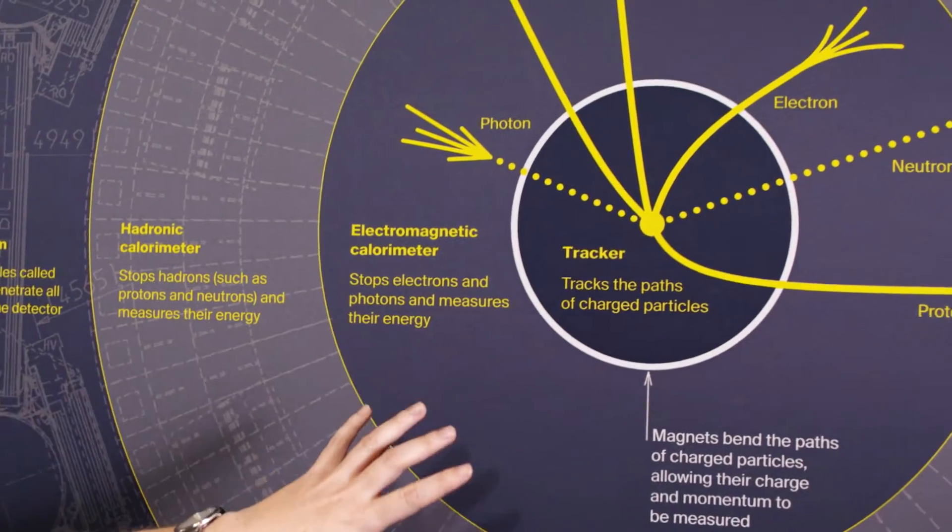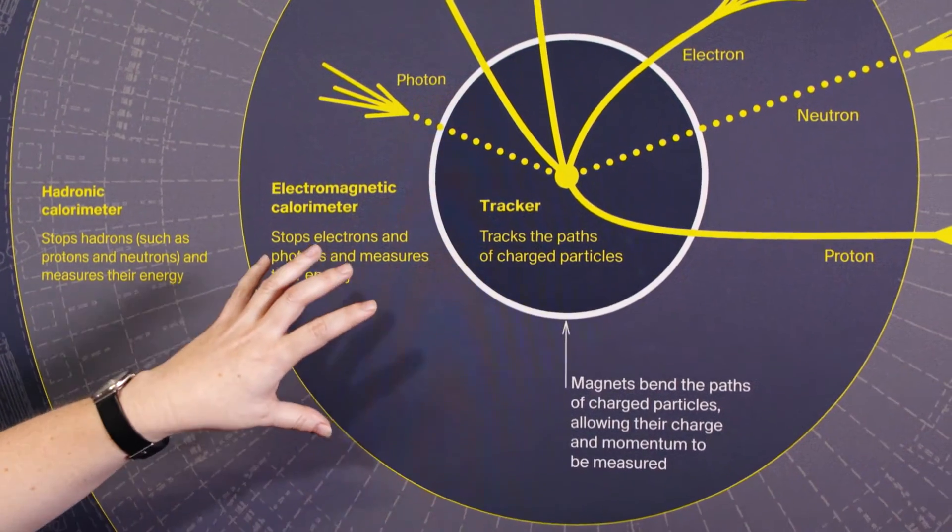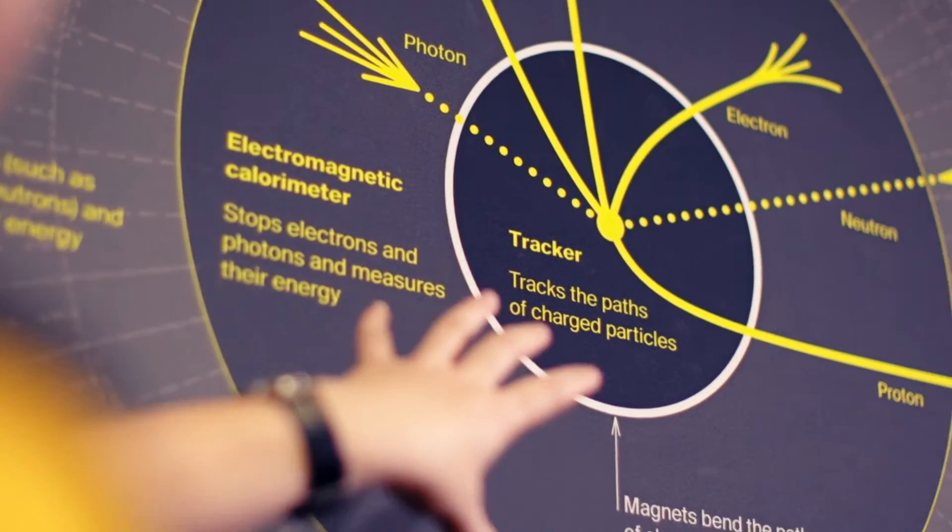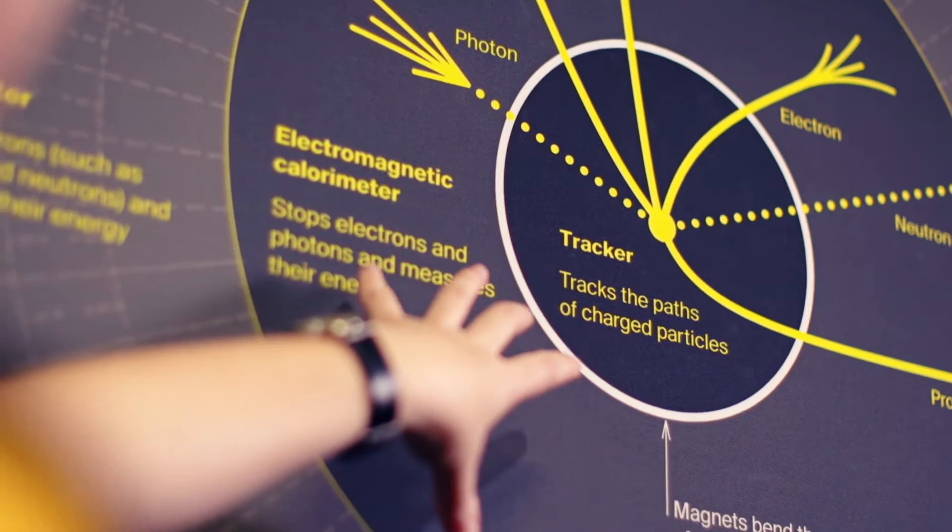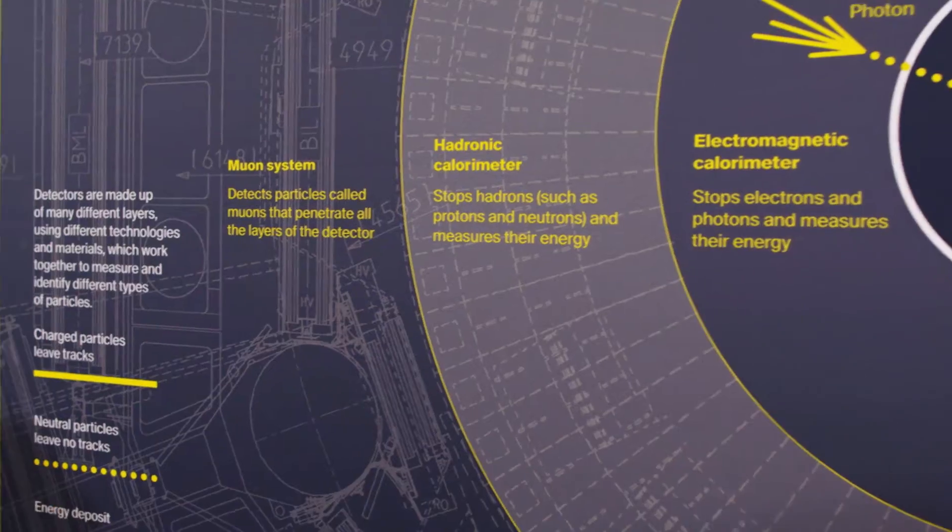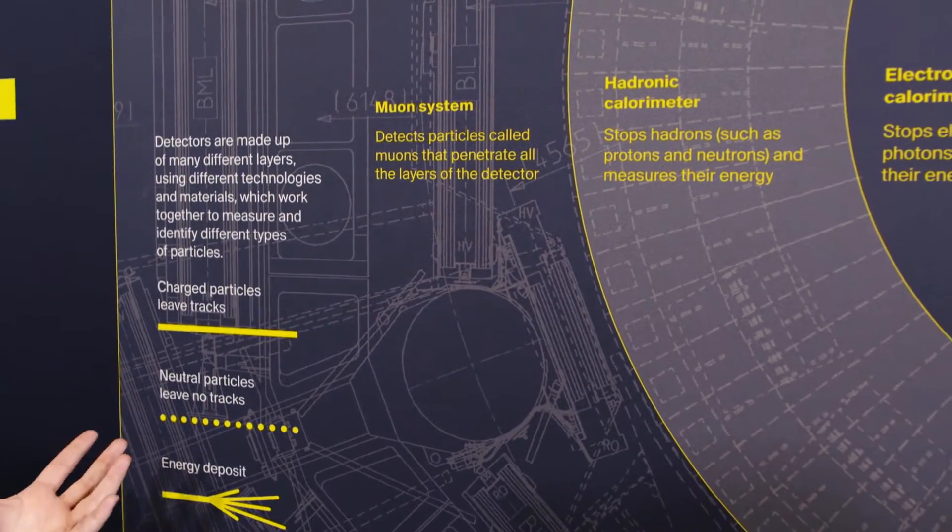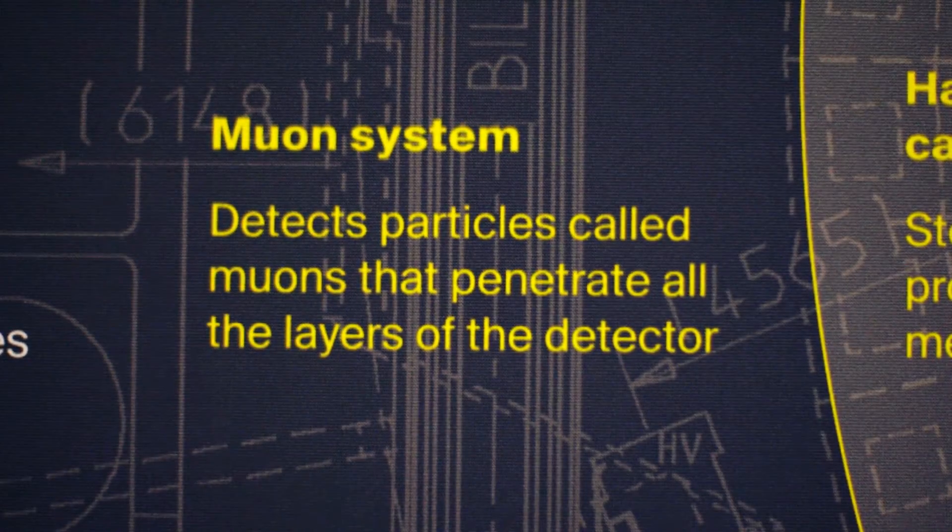In the inner layers typically you'll see particles like photons and electrons being stopped and measured. As we go further out we'll see bigger particles like hadrons, so protons and neutrons will be measured. And then some particles tend to just go right through, so particles called muons just tend to not interact with any of the inner layers of the detector.